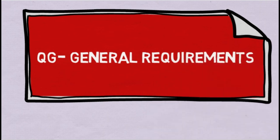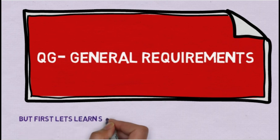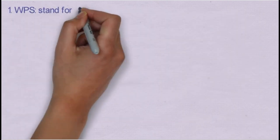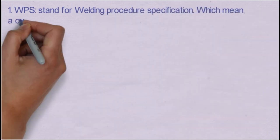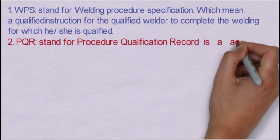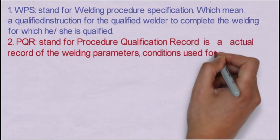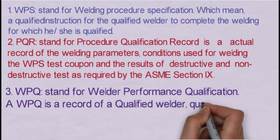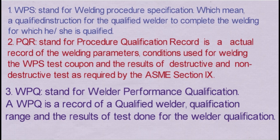Before we start, let us understand some terminology used in the code, which are very important in our training. The first is WPS, which means Welding Procedure Specification — it is a qualified instruction for the qualified welder to complete the welding for which they are qualified. Second, PQR stands for Procedure Qualification Record — the actual record of welding parameters and conditions used for welding the test coupon and the results of destructive and non-destructive testing as required by ASME Section 9. Third, WPQ stands for Welder Performance Qualification — a record of a qualified welder's qualification range and the results of tests done for the welder qualification.